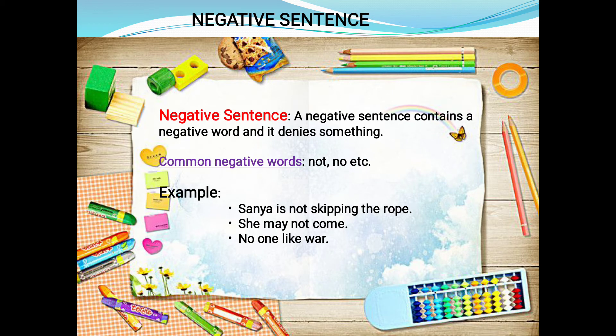Now proceeding to negative sentences. A negative sentence contains a negative word and it denies something. For example, if I said the color of the apple is blue and you said no, you denied it — that is a negative sentence. Common negative words are not, no, nor, etc. For example: 'Sanya is not skipping the rope' — 'not' is present, so it is a negative sentence. 'She may not come.' 'No one likes war.' These are negative sentences and end with a full stop.